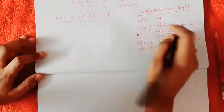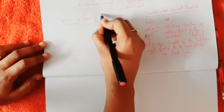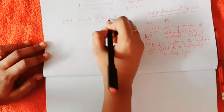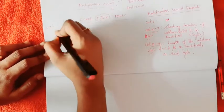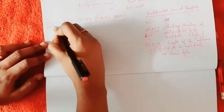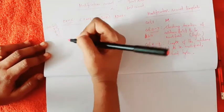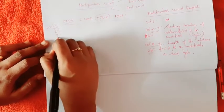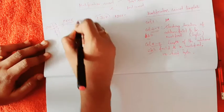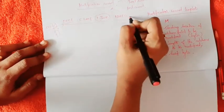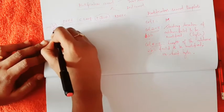Now, this is a format 4 instruction. The location starts at 0006. Since format 4 is 4 bytes, the bytes occupy positions 0006, 0007, 0008, 0009. So 0006 is occupied by the CLOOP JSUB RDREC instruction, and the modification record starts from address 0007.